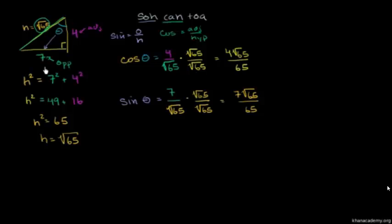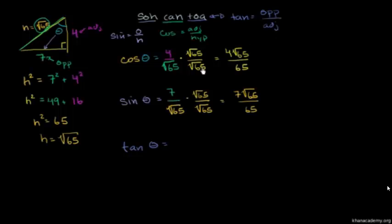Now let's do tangent. The tangent of theta: TOA tells us tangent is equal to opposite over adjacent. The opposite is 7, and the adjacent is 4. So tangent of theta is 7 over 4. And we're done — we've figured out all of the trig ratios for theta.